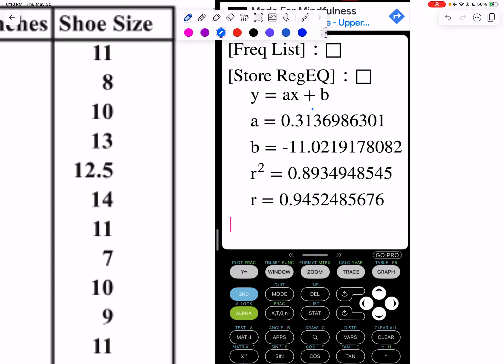So I'm going to have y equals 0.31x. Now my b value, put a number after the two, go next door, that's a one. So it's going to be minus 11.02. And that's going to be my linear regression equation.